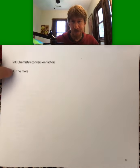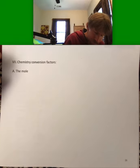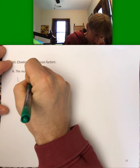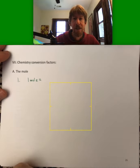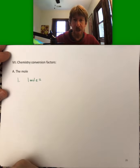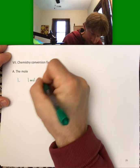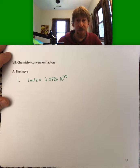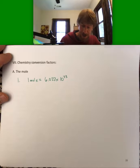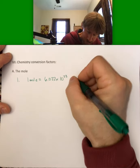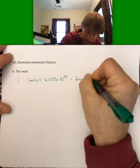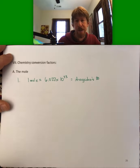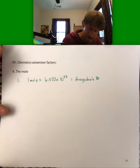One is the mole. The mole, one mole equals 6.022 times 10 to the 23rd. It's a number and it was also called Avogadro's number, and it is the number of items in one mole.